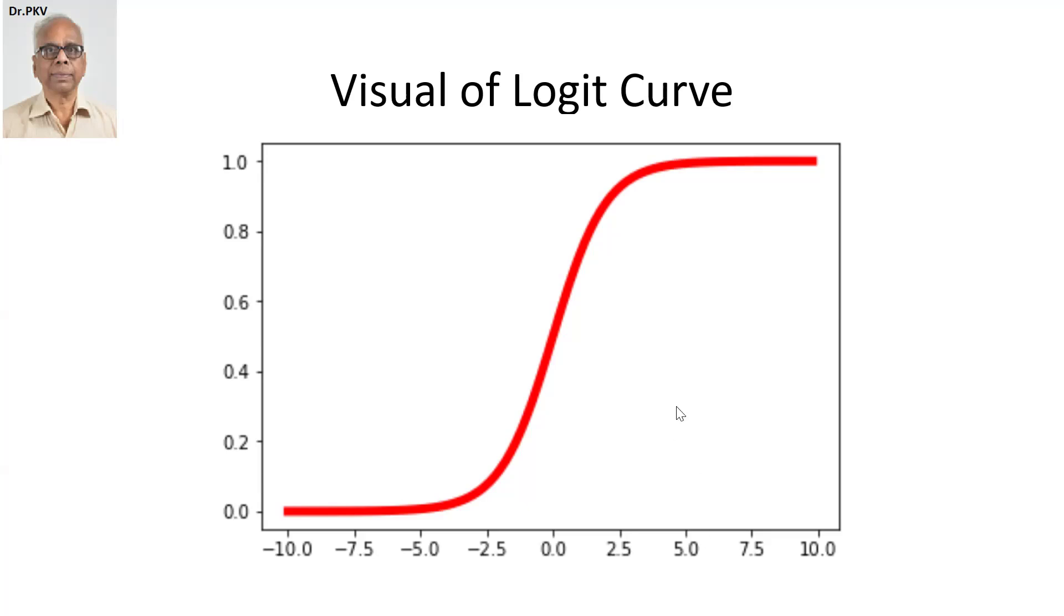And let me just illustrate, for example, when Z is equal to 0, if you look at it, the probability is 0.5. And the S-shaped curve is achieved by using what's called the sigmoid function.